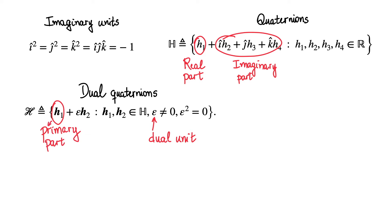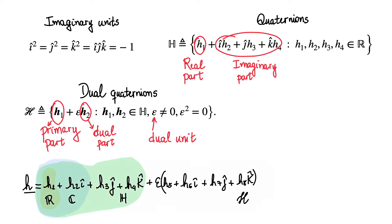Therefore, the dual quaternion set is an eight-dimensional manifold that contains real numbers, complex numbers, quaternions, and, of course, dual quaternions.